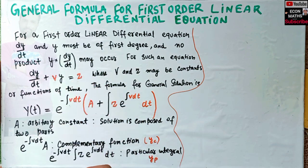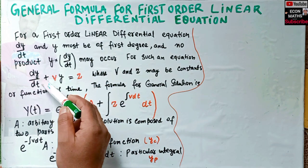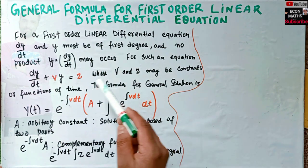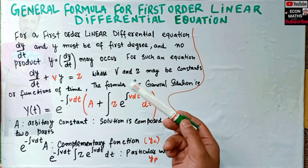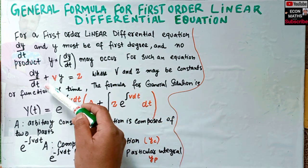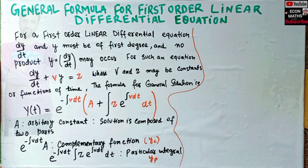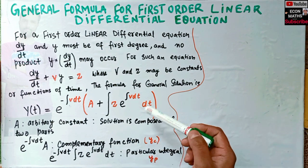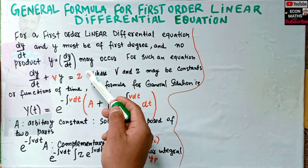For such an equation we usually write it as dy/dt plus vy equals z, where v and z may be constants or at times they may be functions of time.